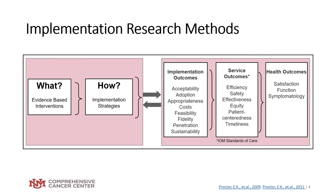Many of you are familiar with the implementation research methods model proposed by Proctor and Colley. On the left side you see the evidence-based intervention, and on the right side you see the health outcomes being targeted. But what you don't typically see explained in research studies are the hows — how did we get that evidence-based intervention into practice, what implementation outcomes did we achieve, and what service outcomes were achieved in the organization?